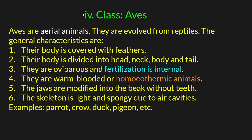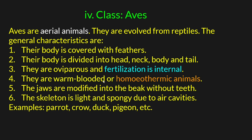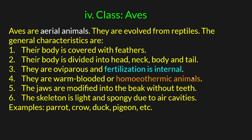The body of Aves is covered with feathers. They have head, neck, body, and tail. They are oviparous and fertilization is internal. They are warm-blooded or homeothermic — meaning their body temperature remains constant. The jaws are modified into a beak without teeth. The skeleton is light and spongy due to air cavities, which helps in flight.